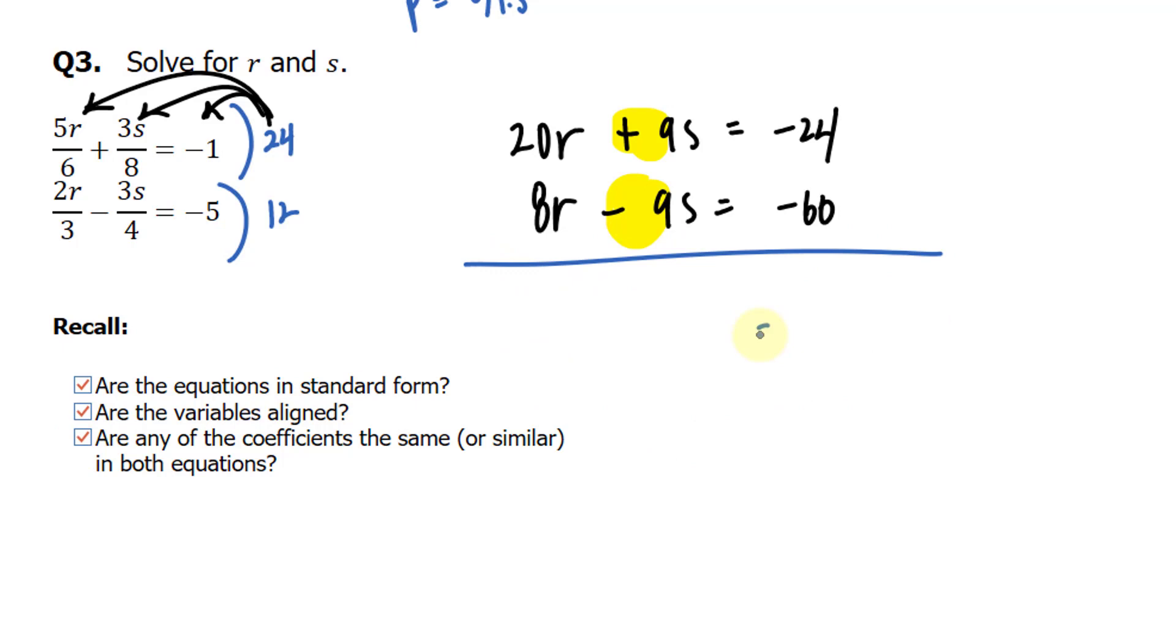And so at this point, we have to decide whether to add or subtract. Will adding lead to the elimination of S? Or will subtracting lead to the elimination of S? If you chose addition, you are right. And I'll show you why. 20 plus 8 is 28R. 9 plus negative 9 actually makes S 0. And negative 24 plus negative 60 is negative 84. Now if we divide both sides by 28, we get R is equal to negative 3.